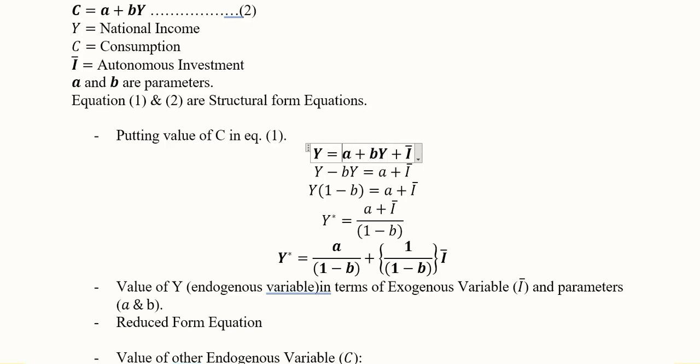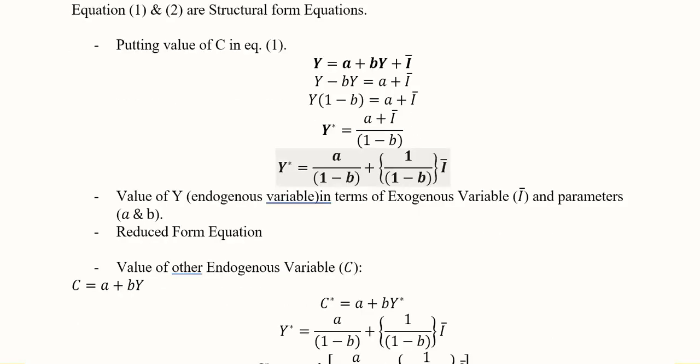This will give us this equation here. Clearly this is the value of C and this is I bar which is as it was before. Now we can easily rearrange to get the value of Y that will be known as Y asterisk. You can pause the video and see these steps. Now we have written the answer in a way where I is separated from the constant term.